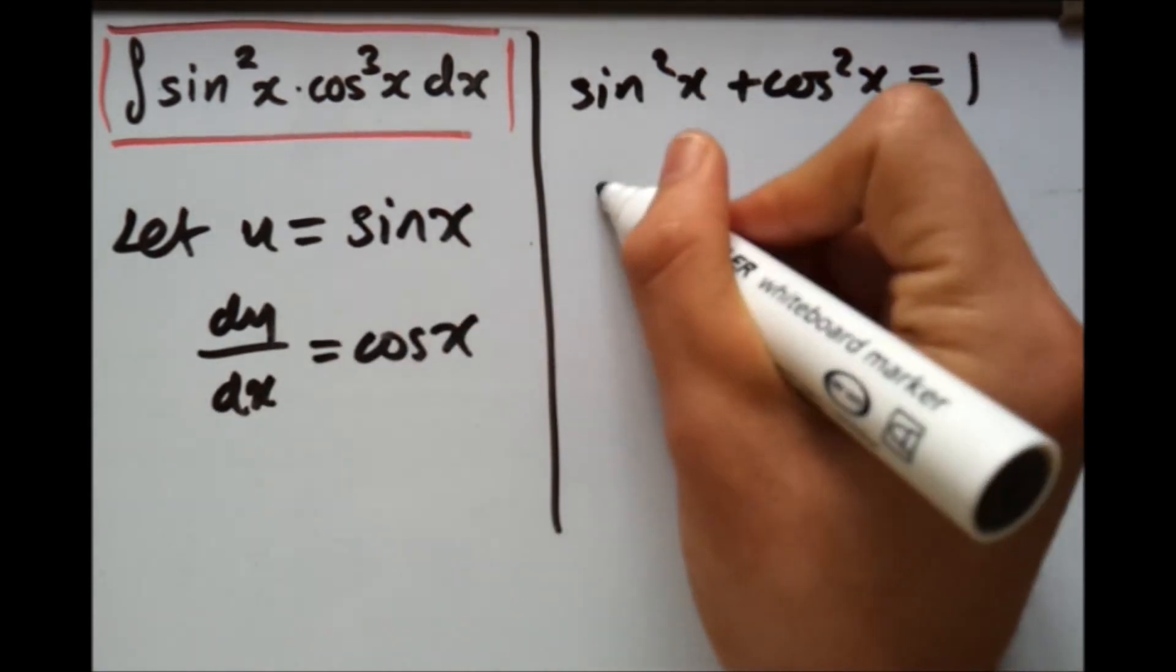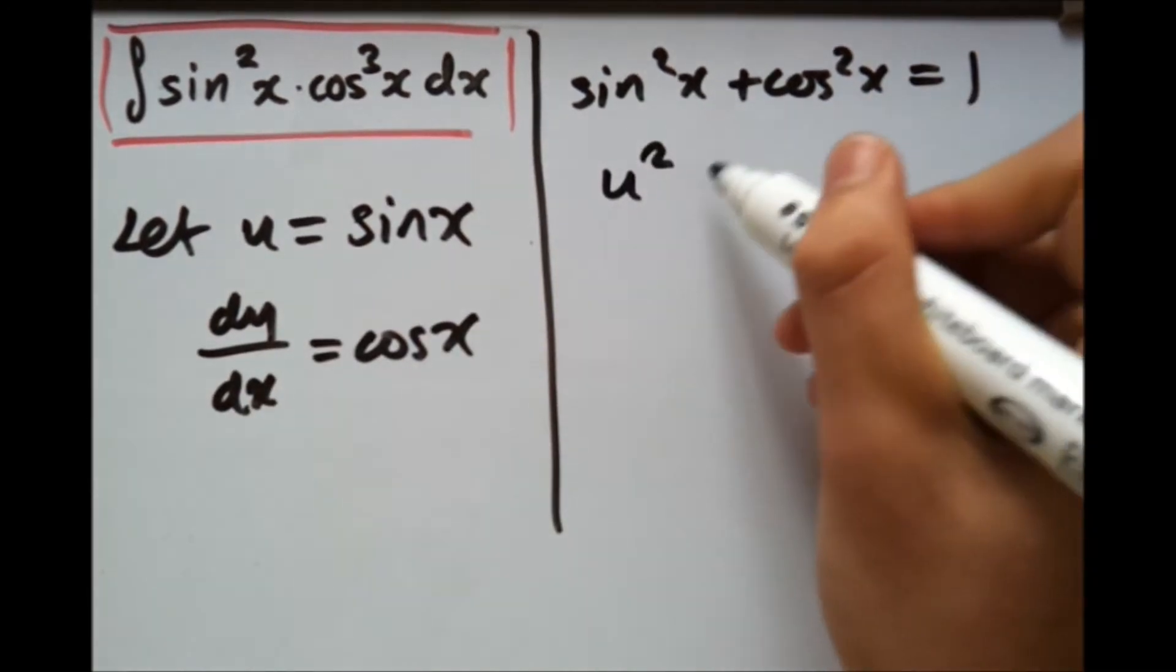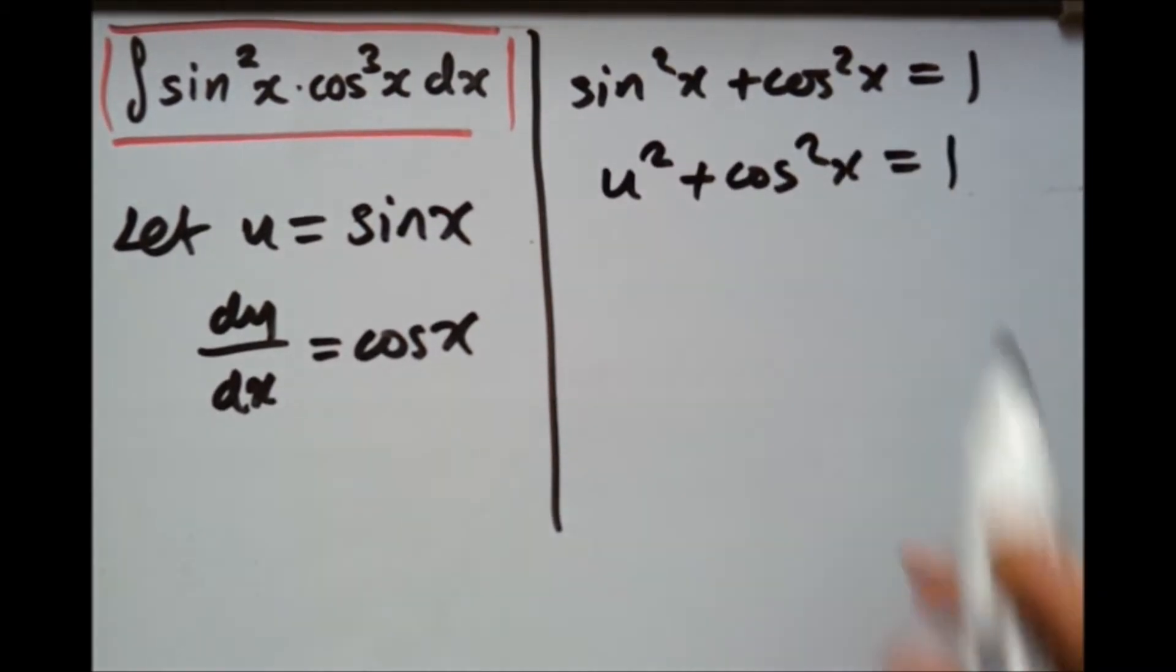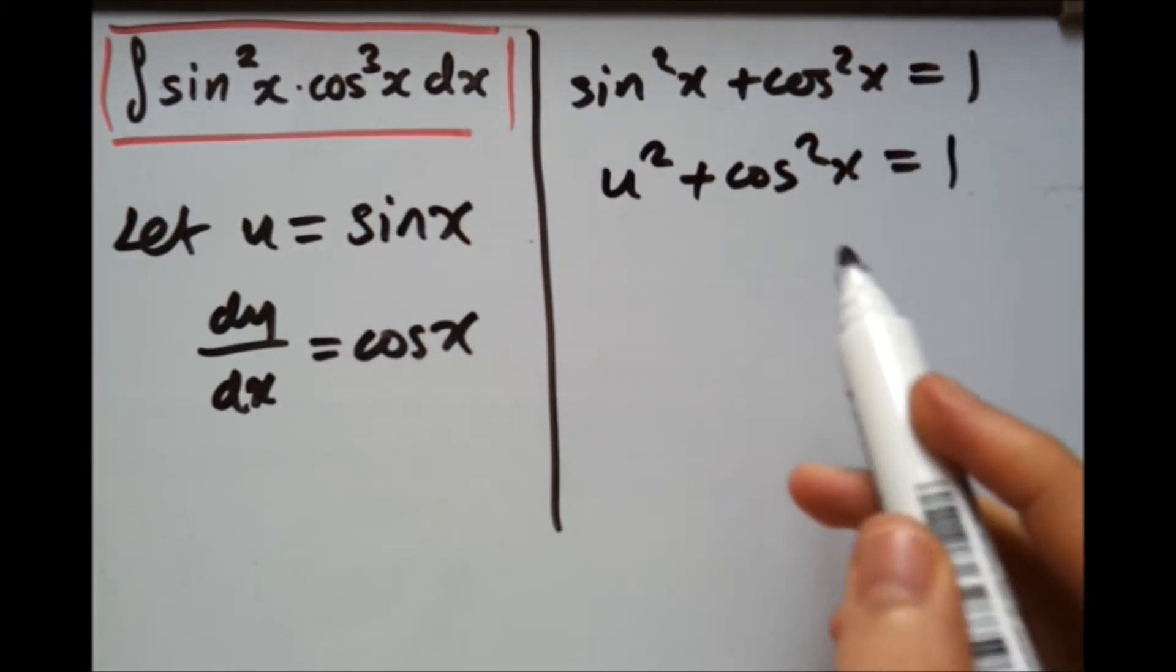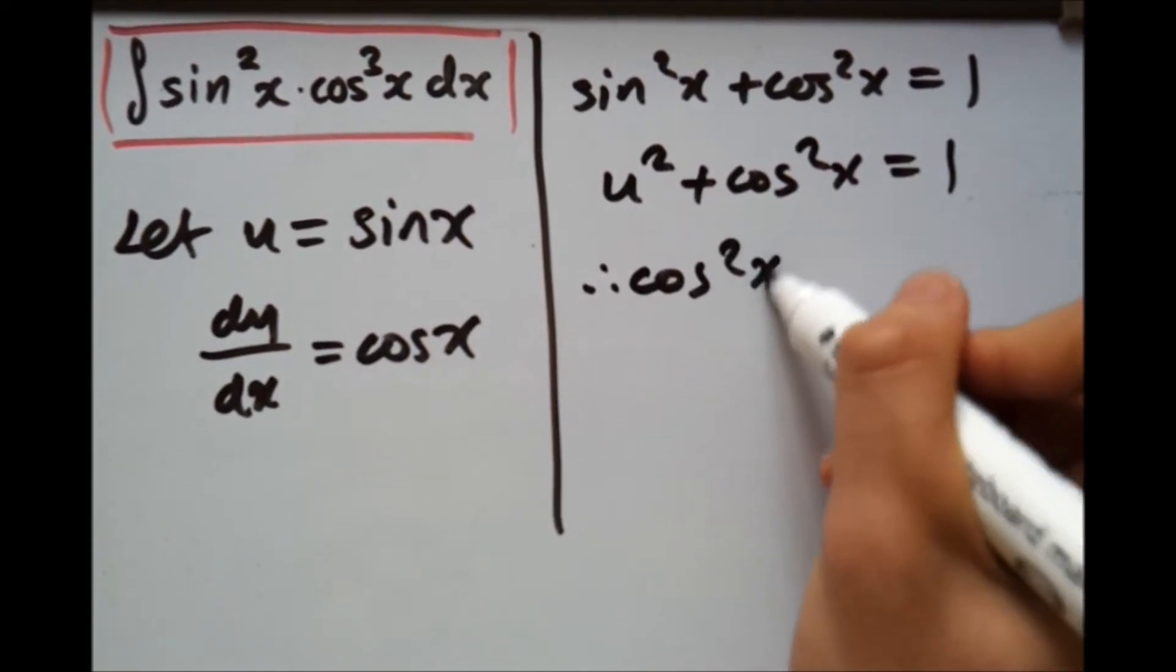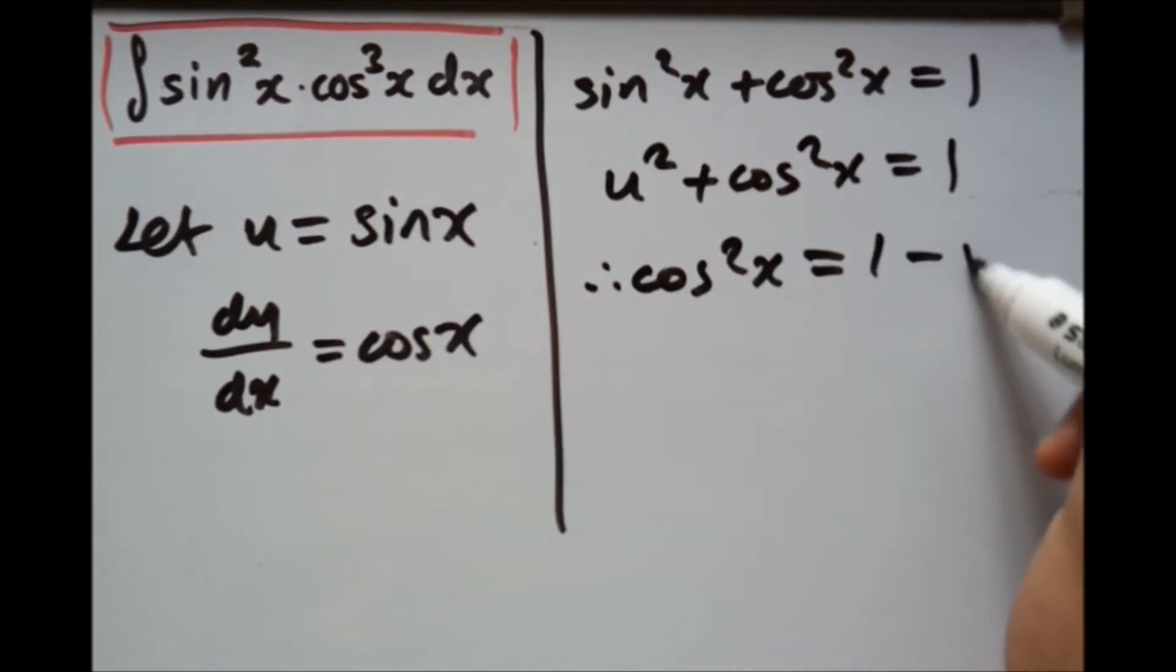So if I put U in here, we'll simply have U squared plus cos squared x equals 1. Now if you just rearrange this to make cos squared a subject, we should get cos squared x equals 1 minus U squared.